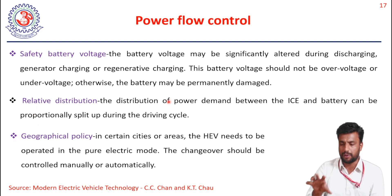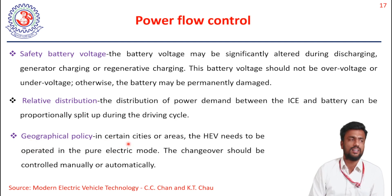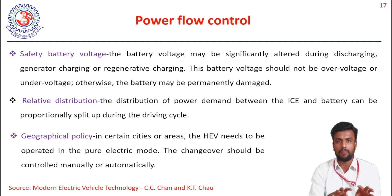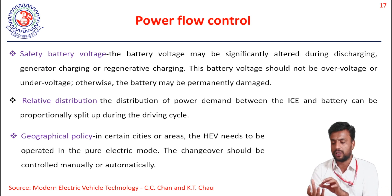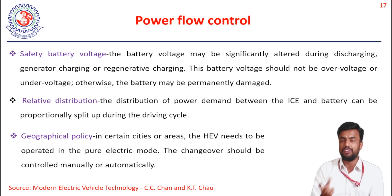For the IC engine to produce optimal power and the battery to produce optimal power, power must be properly distributed. The geographical policy strategy means that in certain cities — urban areas with heavy traffic — pure electric mode may be preferred. The changeover facility in the HEV system allows switching between HEV and EV modes either manually or automatically.